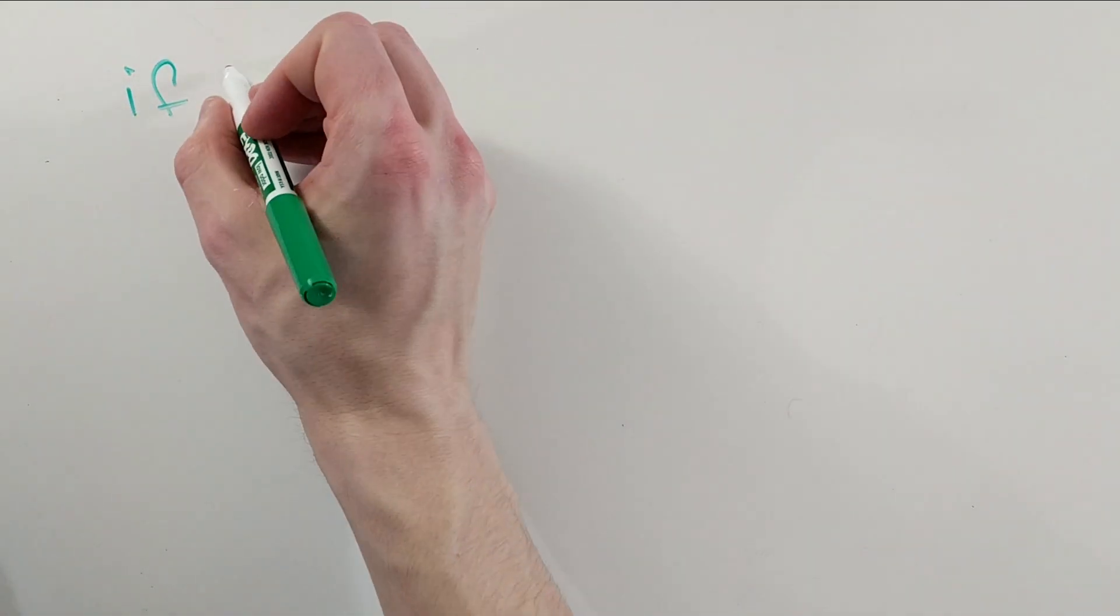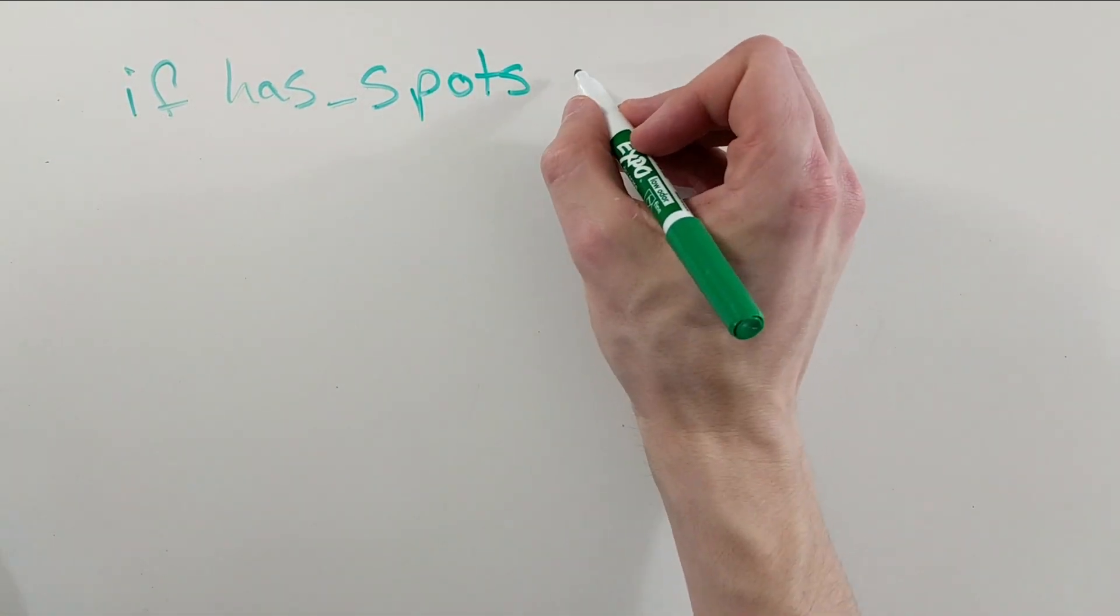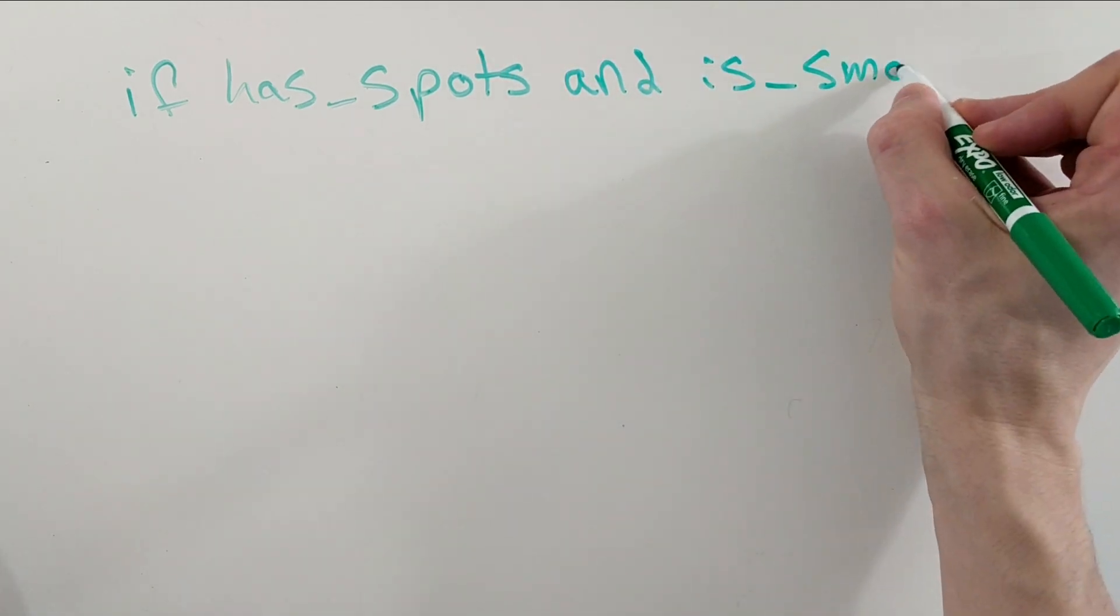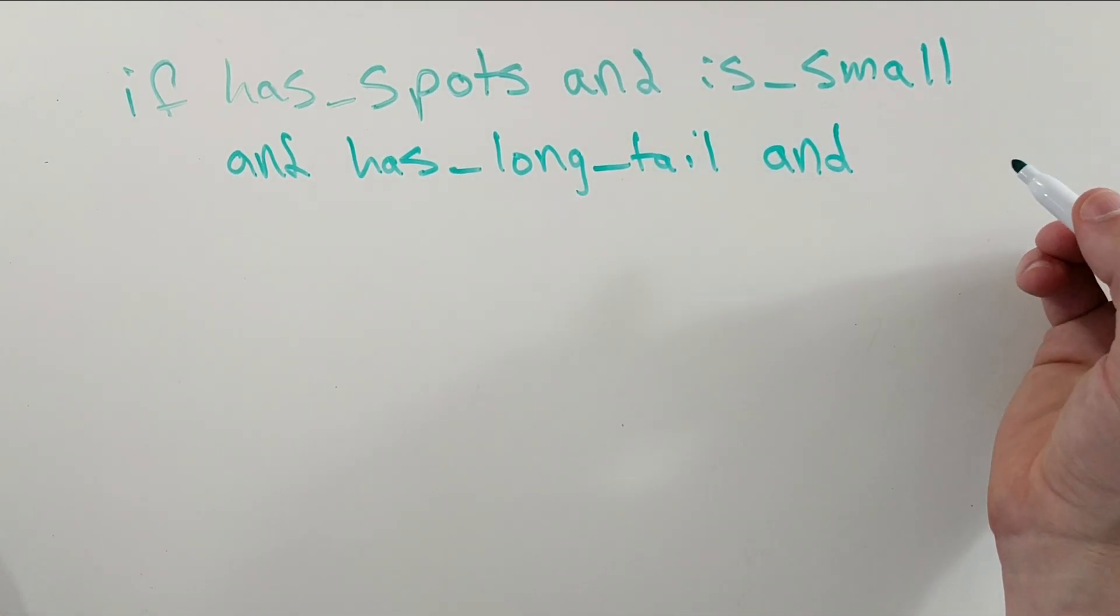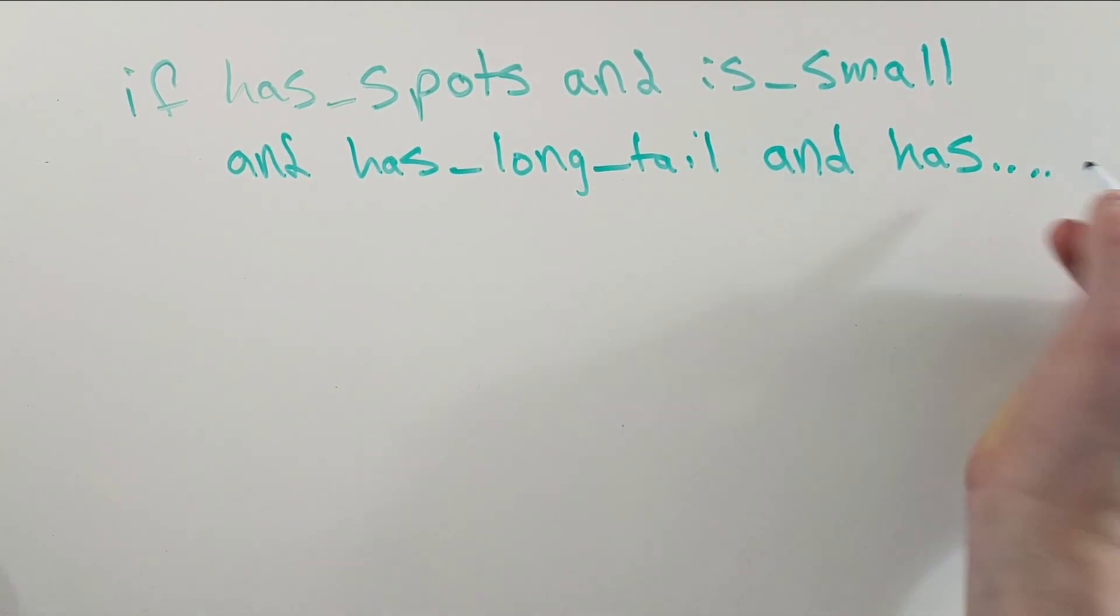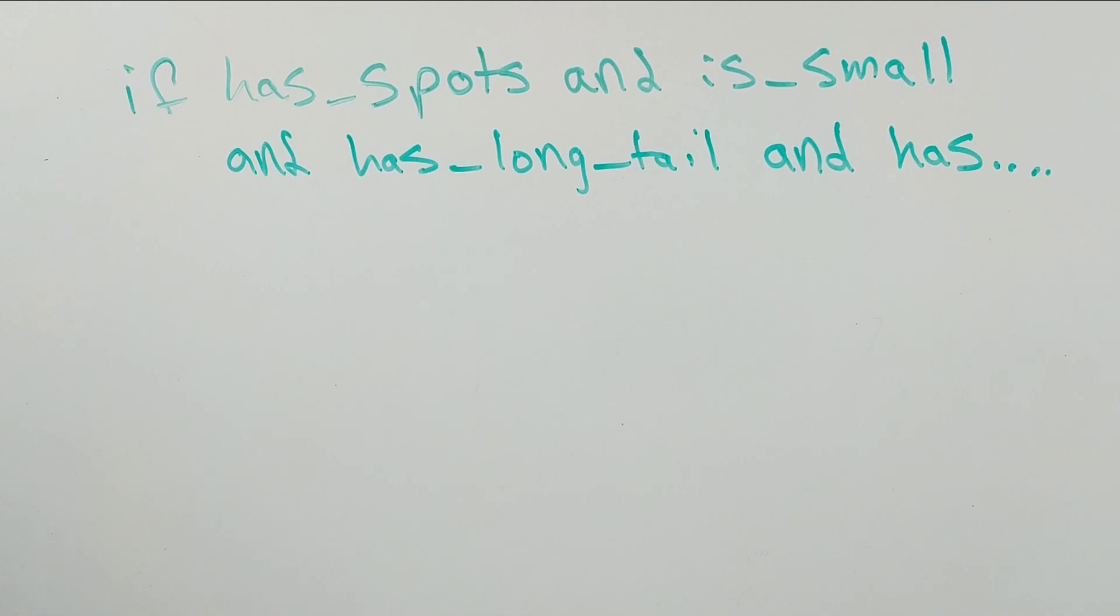If we were to try to solve this by programming, could we even list all of the different possible variations and things that we need to look out for? How long would it take to program by hand? What if we wanted to also identify the breed of the cat? How much more time would we need to solve that?